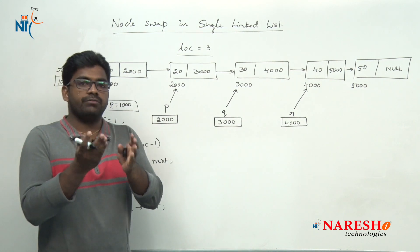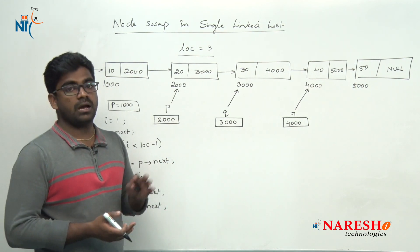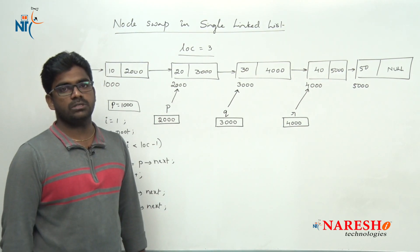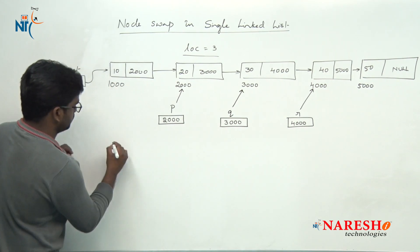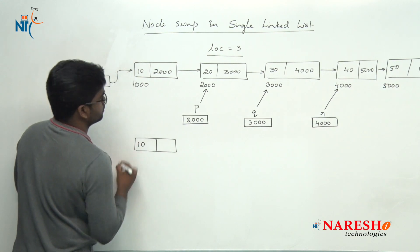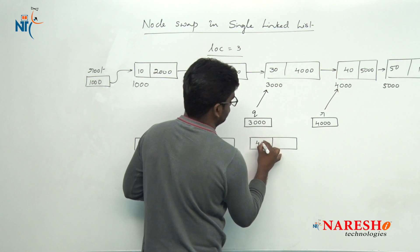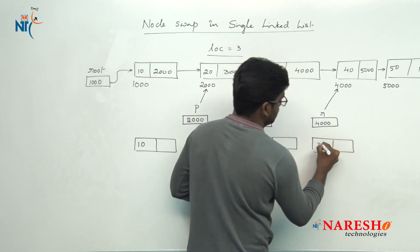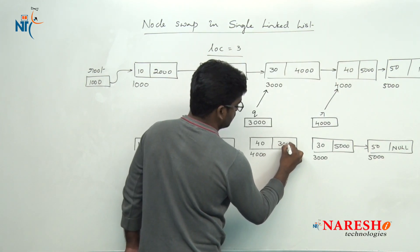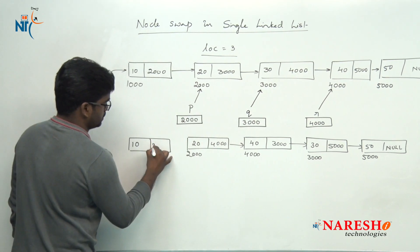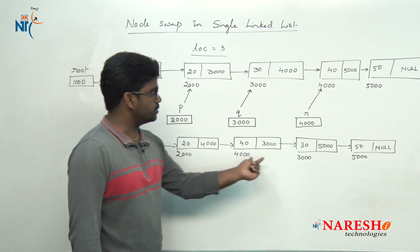Before performing the swap, let's understand how the structure will look after swapping. After the swap: the first node (10) and second node (20) remain the same. The third and fourth nodes are swapped, so 40 comes before 30. The last node (50) remains as usual. We are doing complete node swapping — address swapping, not data swapping — so addresses 4000 and 3000 are also interchanged.